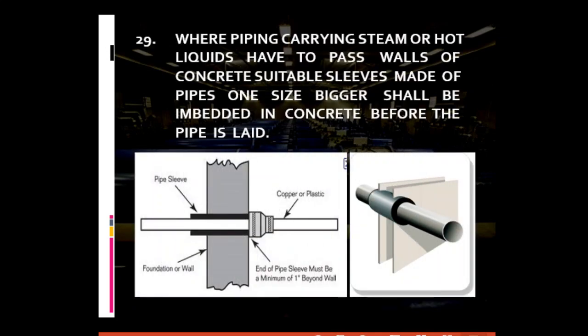For general piping requirement number twenty-nine: where piping carrying steam or hot liquids has to pass through concrete walls, suitable sleeves made up of pipes one size bigger should be embedded in the concrete before the pipe is laid. If pipes conveying substances of varying temperatures are required to pass through concrete walls, they should be provided with sleeves to allow thermal movement of such metallic pipes, preventing any structural damage to the walls and avoiding the buildup of thermal stress.